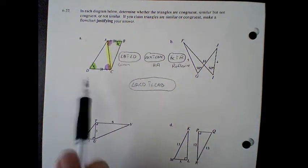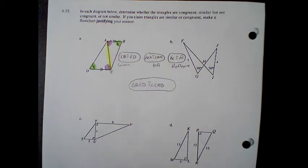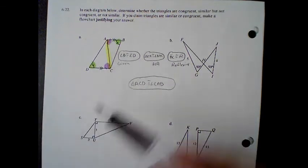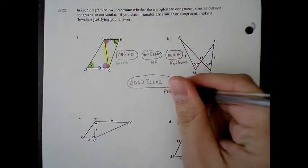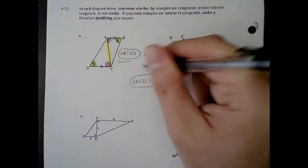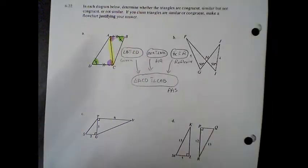And the reason for this one, once again, angle, angle, side. Since the side is not in between them, it's angle, angle, side. And last thing, make sure you show the flow. There we go. That is letter A.